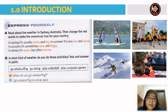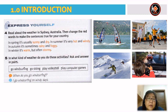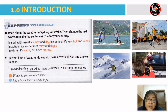Now you can read about the weather in Sydney, Australia. Then change the red words to make the sentences true for your country. Example: in spring, it's usually sunny and dry. In summer, it's very hot and windy. In autumn, it's sometimes rainy and foggy. In winter, it's warm but often stormy. In what kind of weather do you do these activities? Ask and answer in pairs — for example, go windsurfing, go skiing, play volleyball, play computer games. You can say: I go windsurfing on windy days.